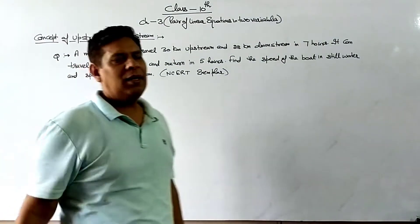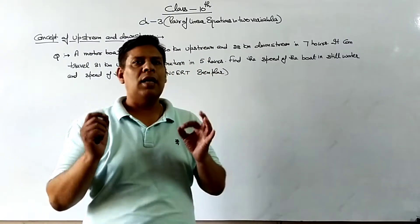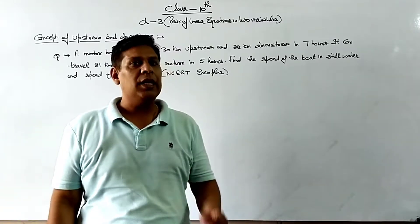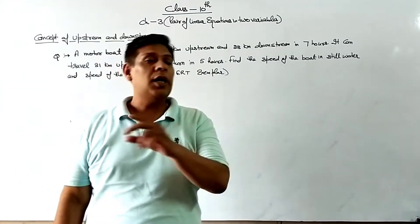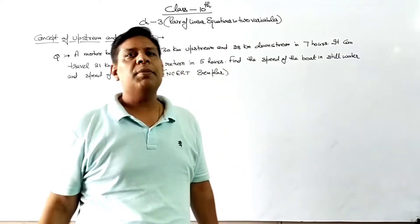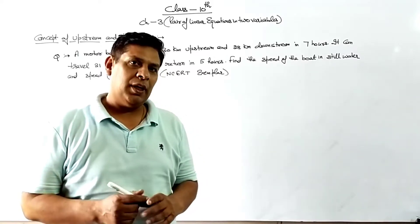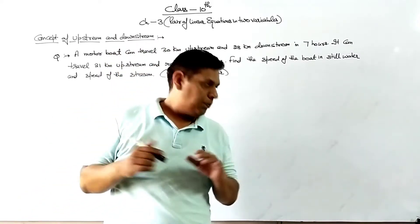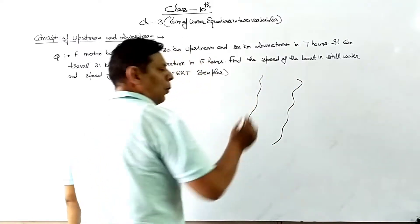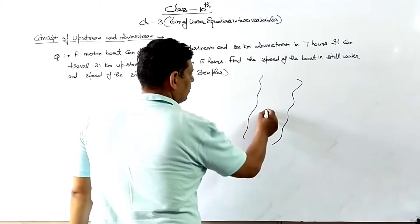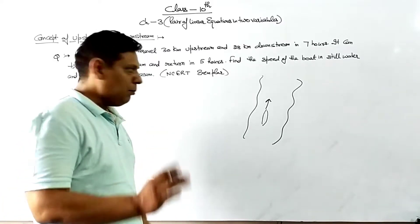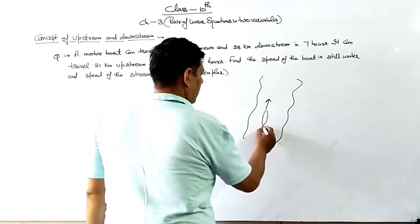Hello students, welcome again. Aaj hum baat karenge Class 10th ke Chapter 3, that is Pair of Linear Equations, mein se concept: converting the equations into linear form. Aur uske bhi ek core concept, that is upstream and downstream. Jab koi boat mein — suppose this is my stream — when a boat goes up, that is called upstream, and when it goes down, that is called downstream.